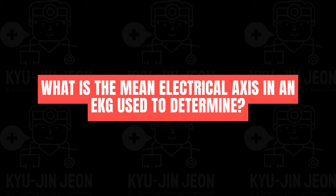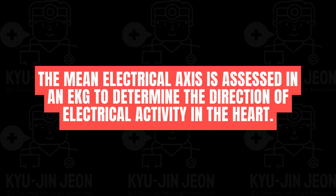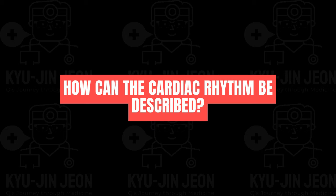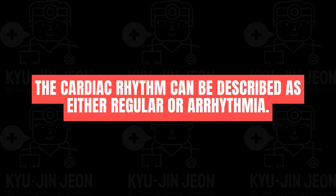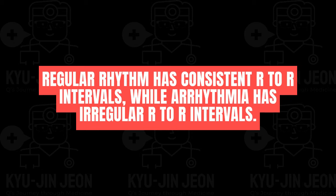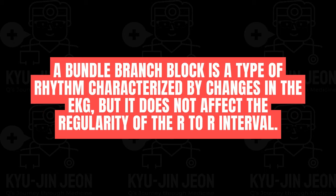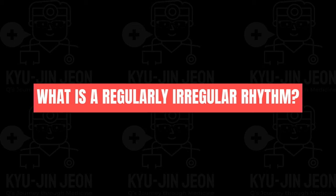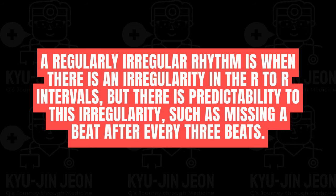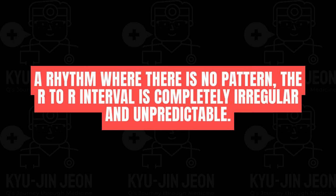The mean electrical axis is assessed in an EKG to determine the direction of electrical activity in the heart. Cardiac rhythm can be described as regular or arrhythmia. Regular rhythm has consistent R-to-R intervals, while arrhythmia has irregular R-to-R intervals. A regularly irregular rhythm has predictable irregularity, such as missing a beat after every three beats. An irregularly irregular rhythm has no pattern — the R-to-R interval is completely irregular and unpredictable.